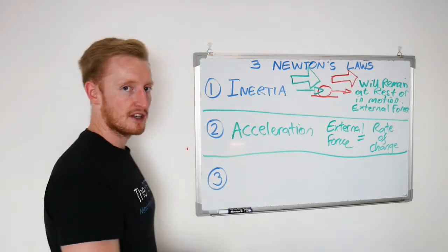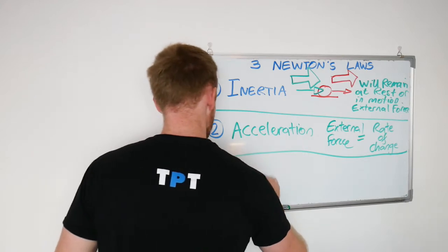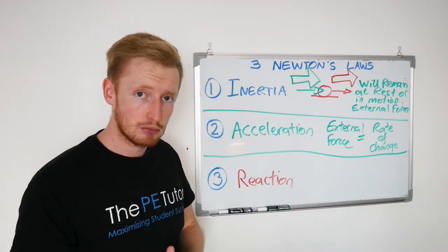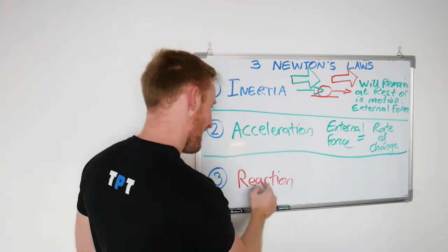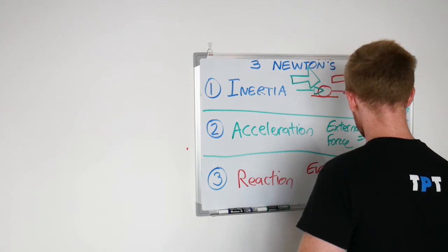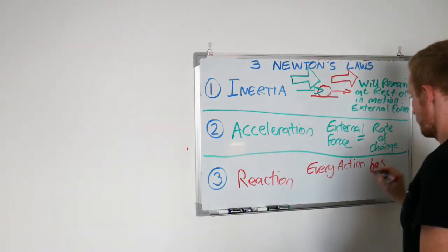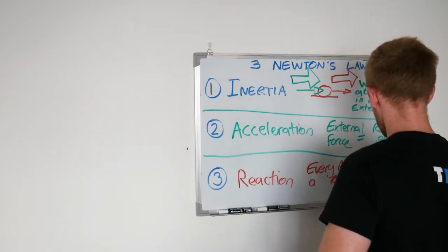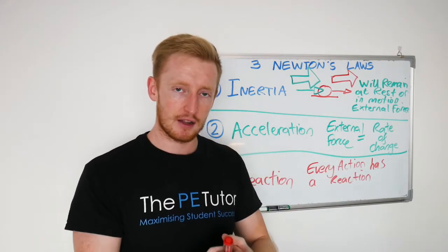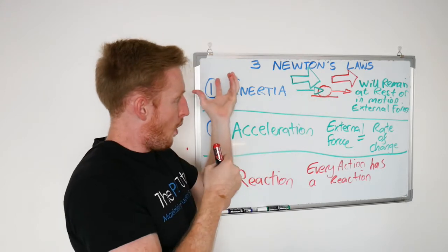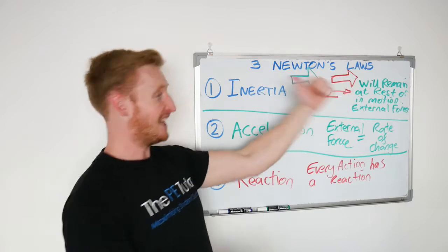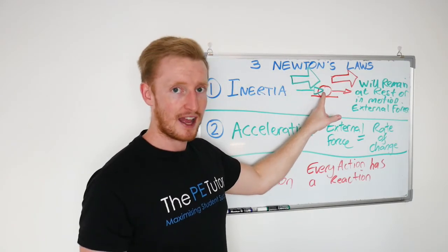And our final one is law of reaction. Possibly the most well-known one to quote. Every action has an equal and opposite reaction. And what this is essentially saying is that when two objects or two surfaces or two forces come into contact, let's just say for here for example, one which is being generated in one way, there will be an opposing reaction force that is put back or given off the body or the object that the first force was acting on.